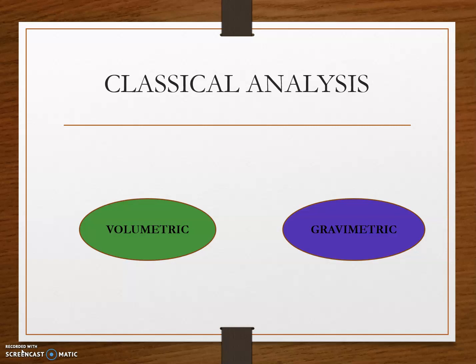We can classify the analysis into two types: classical analysis and modern analysis techniques. Classical analysis is also termed wet chemical analysis — this is the basic analytical technique. It consists of analytical techniques that use no mechanical or electronic instruments other than a balance. Classical analysis is of two types: volumetric and gravimetric.